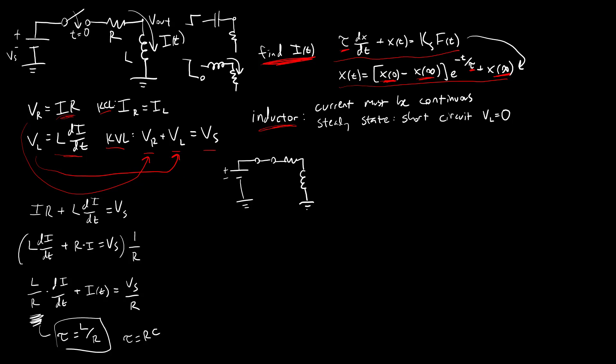We know that before the switch closes, when the switch is open, there can't be any current in the circuit. So the initial current before the switch closes has to be zero. And then applying continuity, current through an inductor must be continuous. So we know that the instant that switch closes, the current to the inductor is still going to be zero. So we have I of zero equals zero.